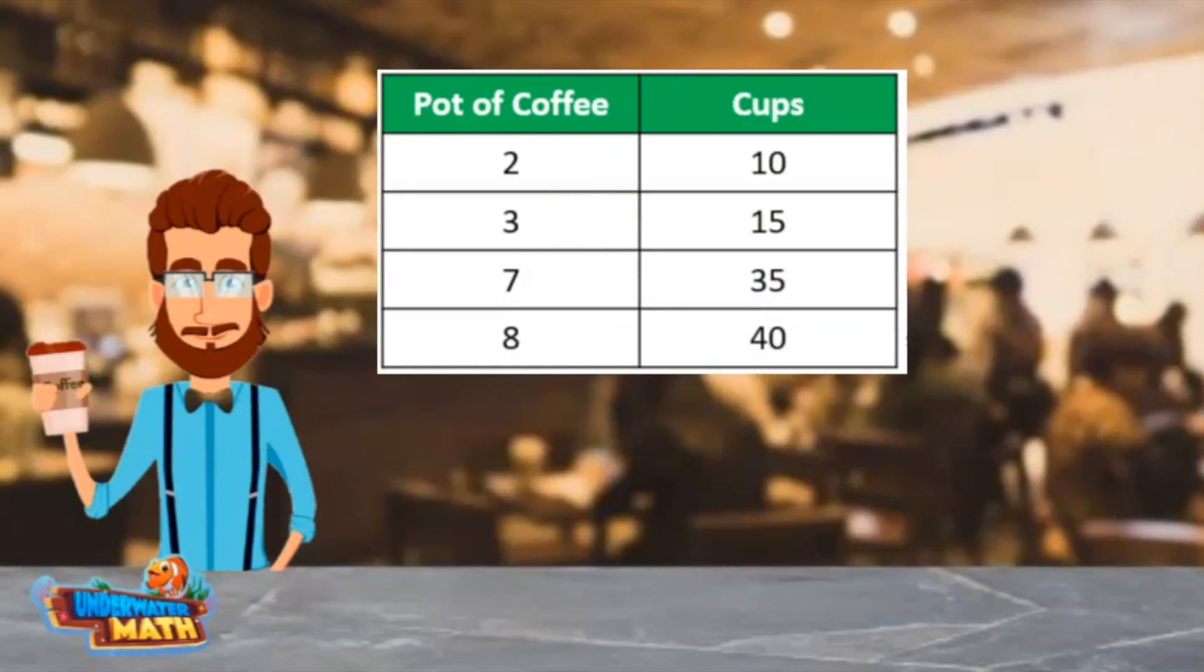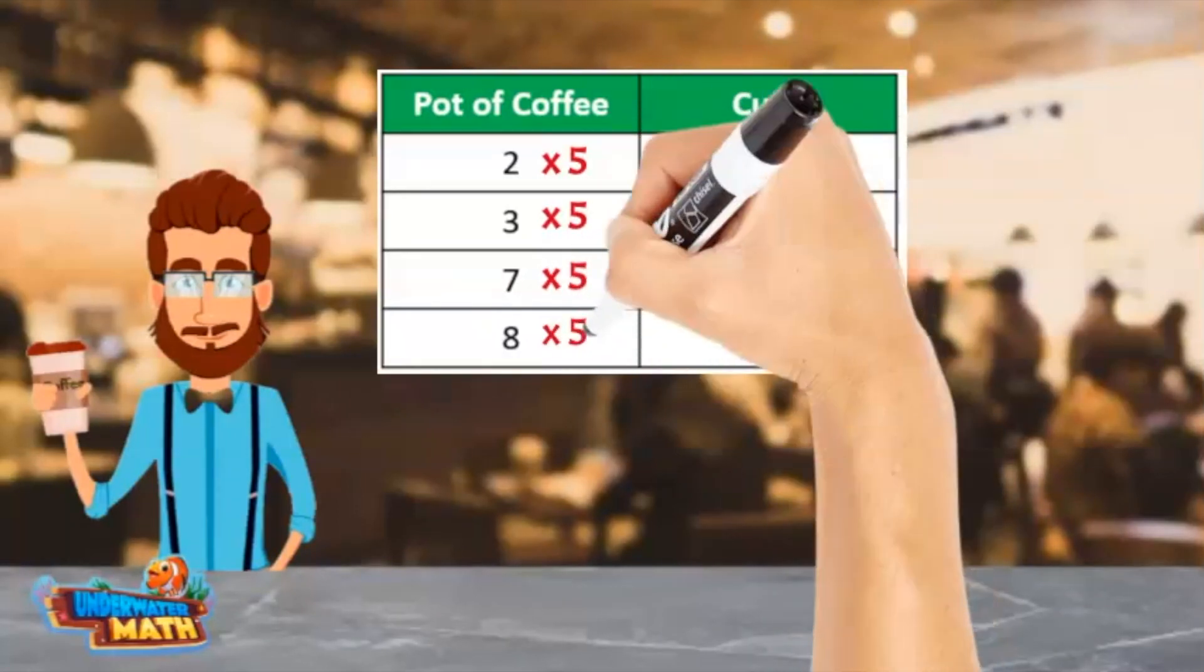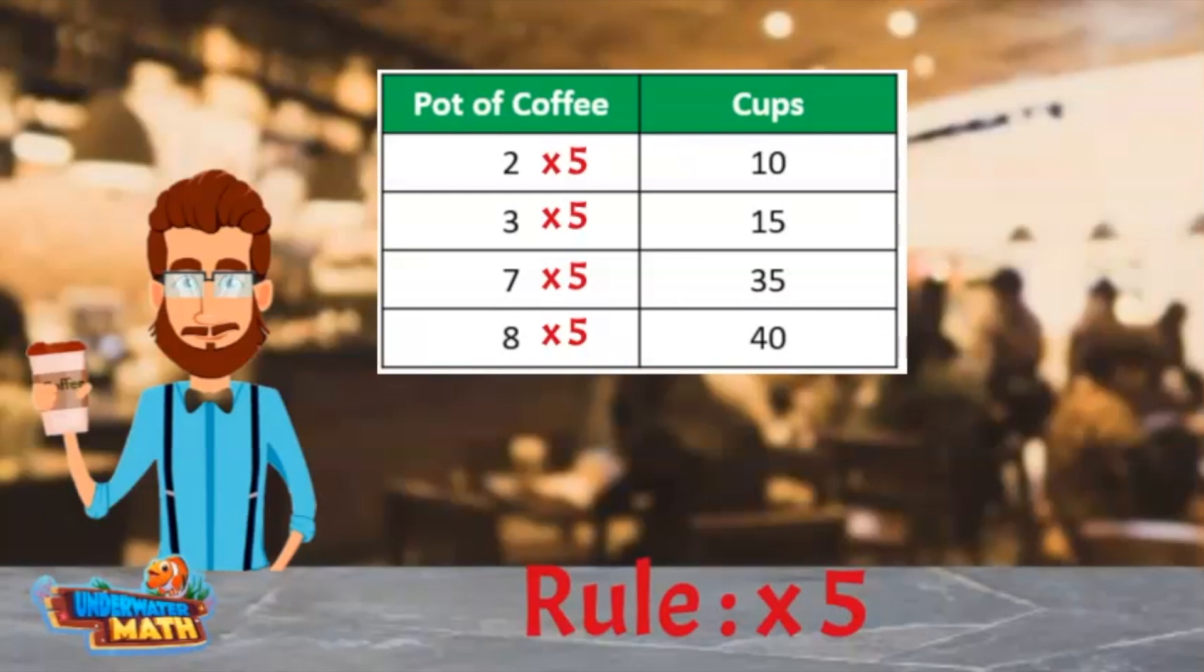Now I am going to multiply. 2 times 5 equals 10. 3 times 5 equals 15. 7 times 5 equals 35. And 8 times 5 equals 40. This means the rule is times 5.